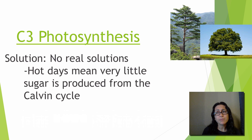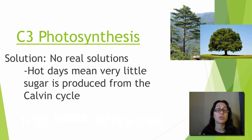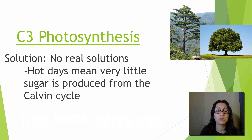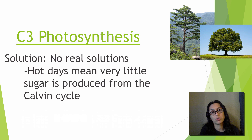C3 photosynthesis has no real solution to photorespiration. On hot dry days, the plant just suffers slow production of sugars. The good thing is that when plants make G3P, they can turn it into glucose and then into sucrose and store the energy that way, drawing on those sugar reserves.